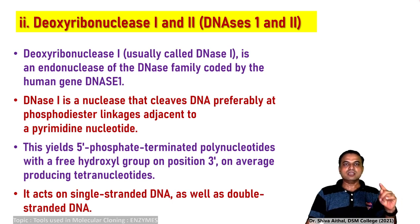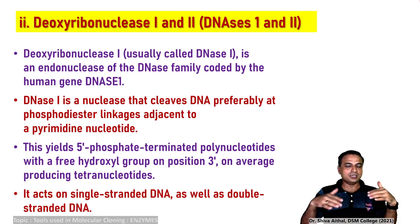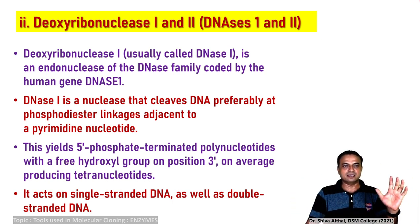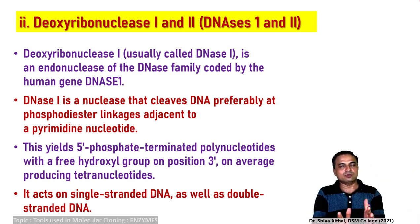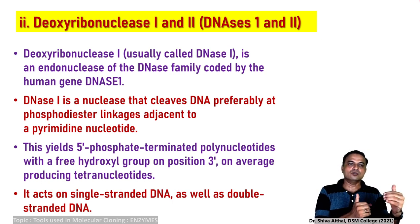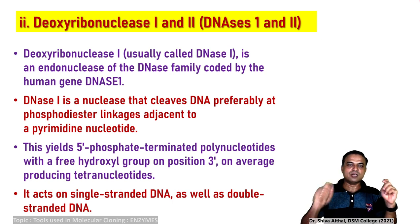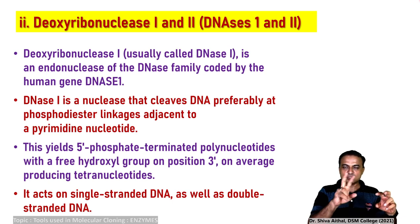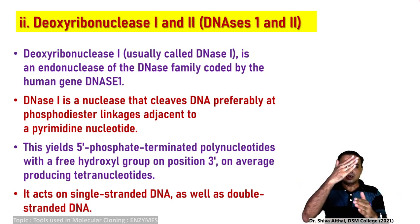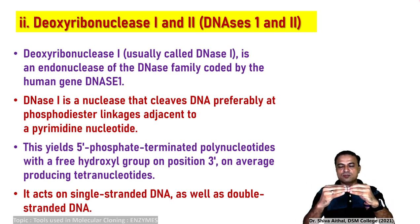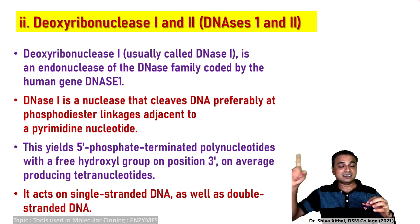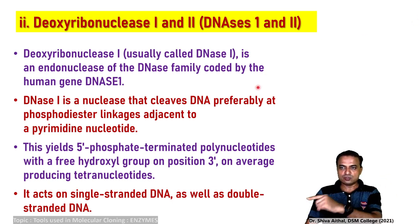The second enzyme is deoxyribonuclease 1 and deoxyribonuclease 2. DNase 1 is usually called DNase 1 and it is an endonuclease — nuclease means cutting, very specific type of cutting. DNase 1 is a class of nuclease coded by the human gene. DNase 1 cleaves DNA preferably at a phosphodiester linkage adjacent to a pyrimidine nucleotide, and DNase 1 and DNase 2 have different types of cuts at the phosphodiester linkage.